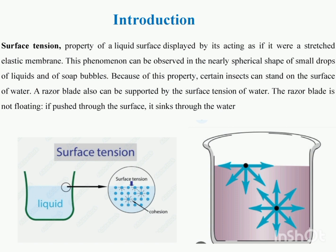So surface tension is defined as the tension of the surface film of a liquid caused by the attraction of the particles in the surface layer by the bulk of the liquid, which tends to minimize surface area.